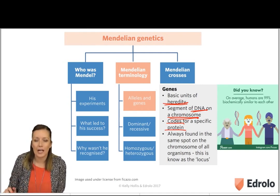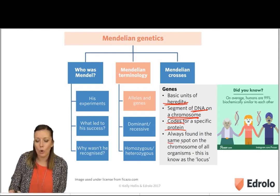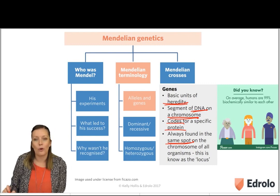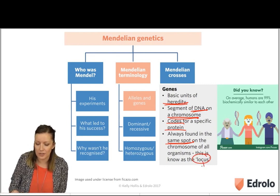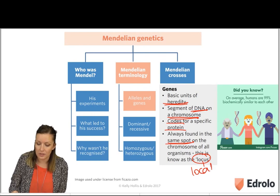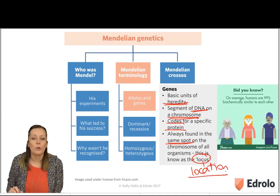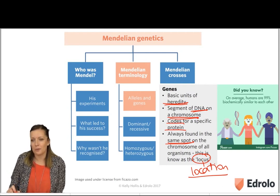Proteins are important as they carry out lots of different jobs in our body. Lastly, genes are always found on the same spot on the chromosome of all organisms, and this is known as the location or the locus. So they're all found at the same point on the same chromosome.